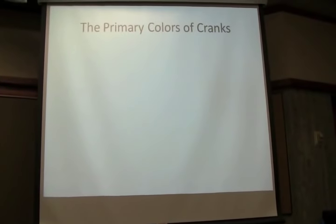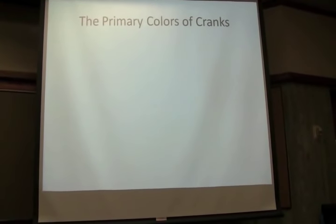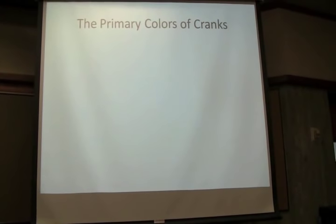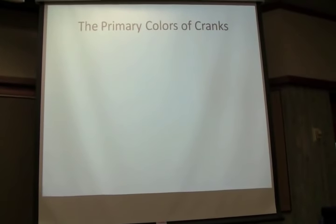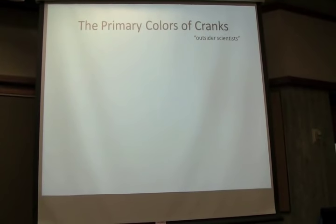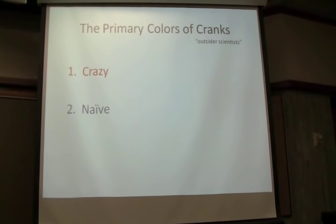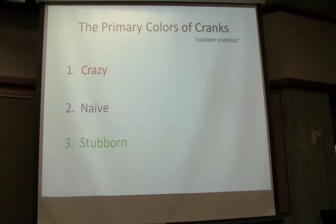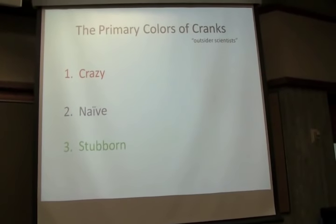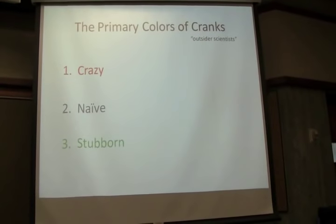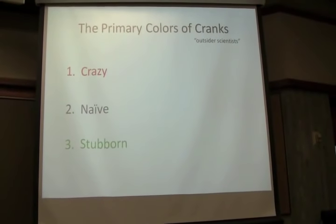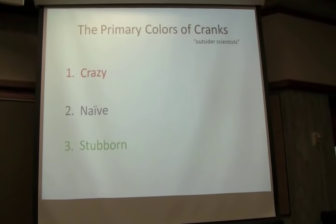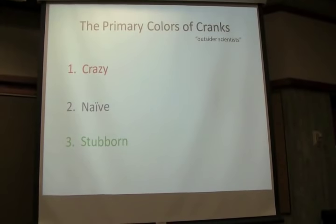Now, the primary colors of cranks. After reading through these theories, I very quickly developed a sort of taxonomy of cranks. They basically broke down into three categories. There's the crazy, the naive, and the stubborn. And cranks can have any one or all three of these attributes, but they have at least one. And also, using the term cranks, some people don't like the term crank, think it's too derogatory. Some people prefer the term outsider scientists. They're cranks.